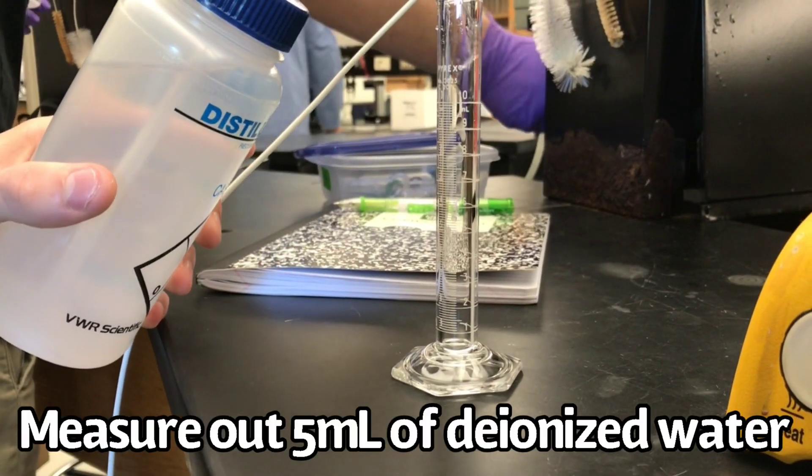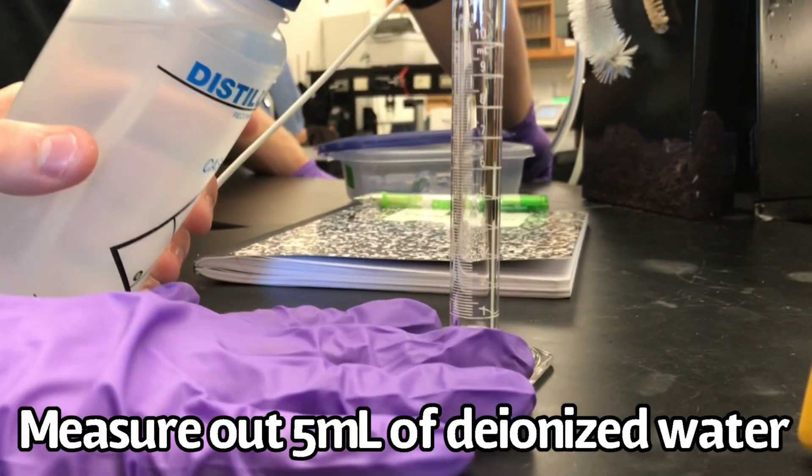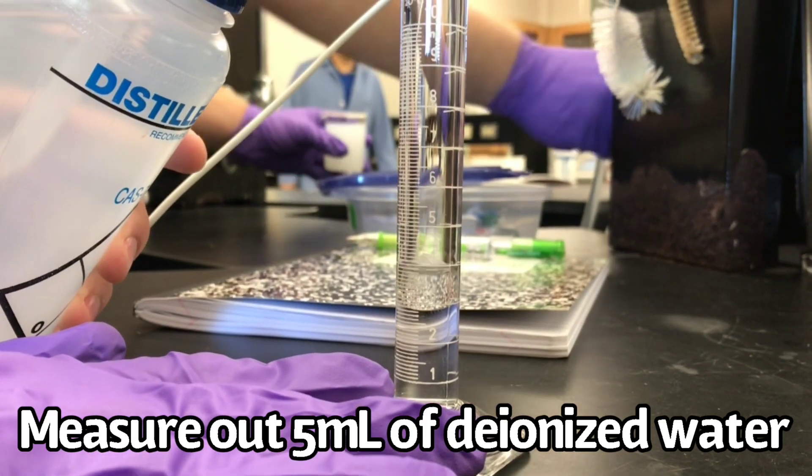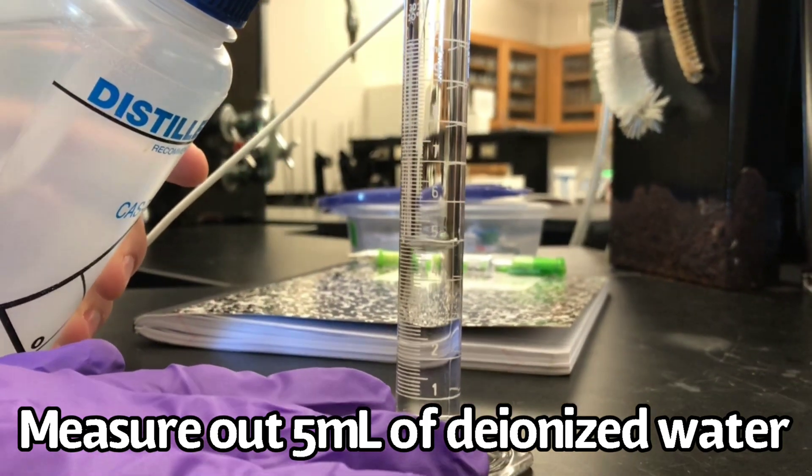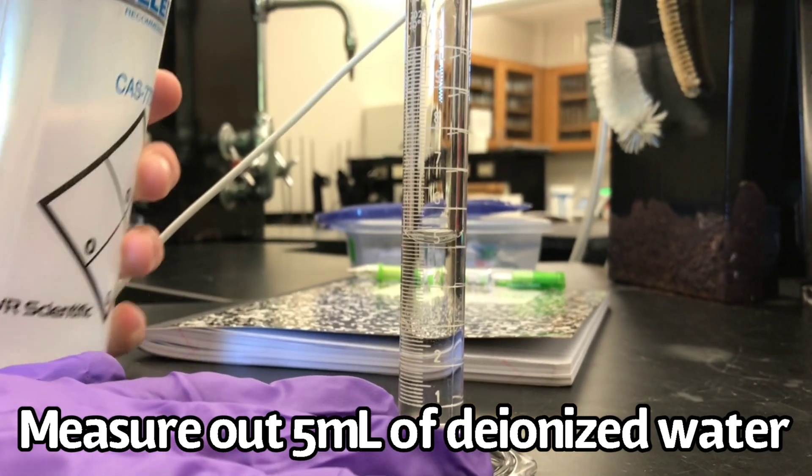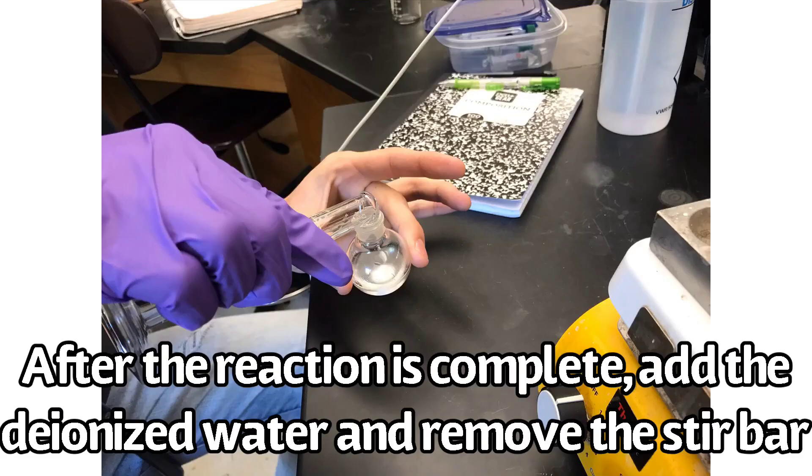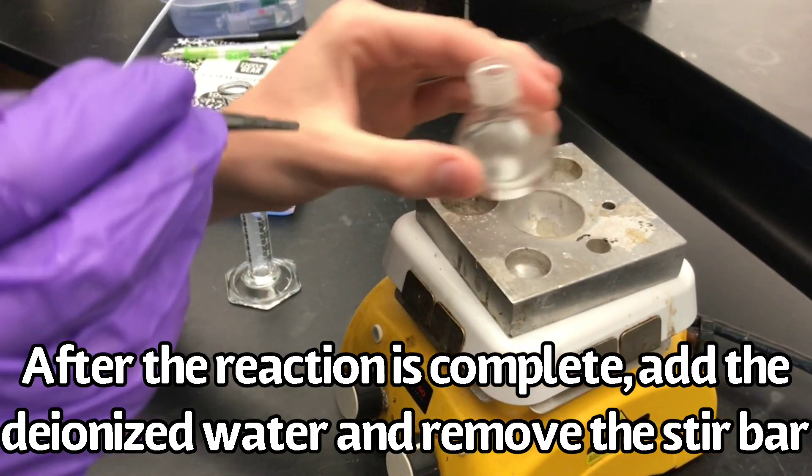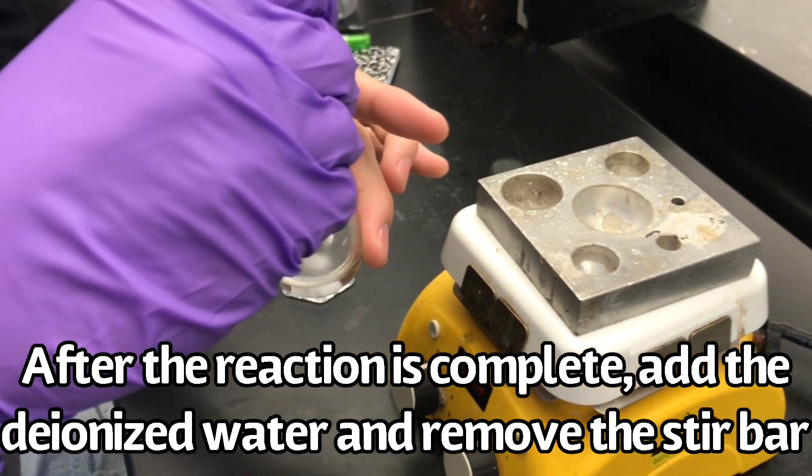While the solution is stirring, measure out an additional 5 milliliters of deionized water. Once the reaction is complete, add the 5 milliliters of deionized water and remove the stir bar.